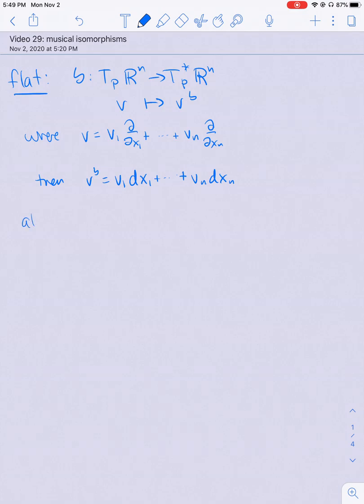And alternately, if you write V as a column vector then V flat is the row vector with the same entries.